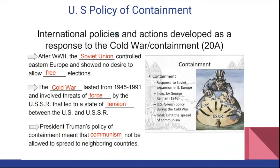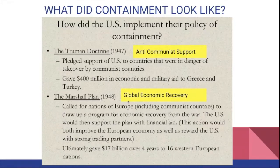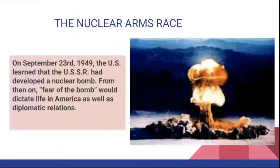Truman's policy of containment meant that communism could not be allowed to spread to neighboring countries, and the US offered economic aid and protection to those countries. The Truman Doctrine provided anti-communist support through money and military aid. The Marshall Plan focused on global economic recovery — even for some communist nations — providing $17 billion over four years to 16 Western European nations to prevent another war, informed by lessons from the Great Depression.